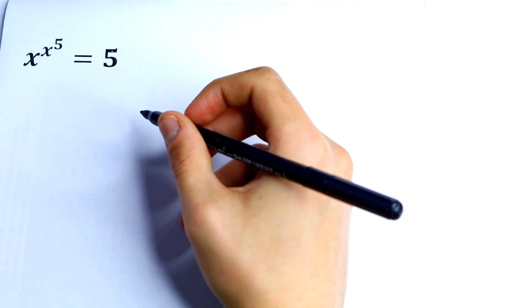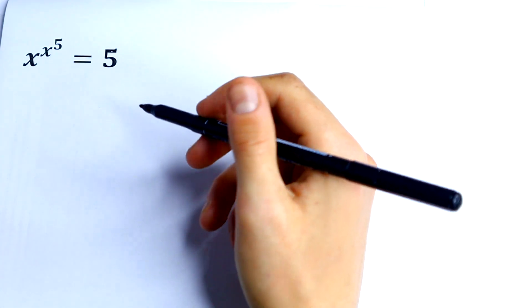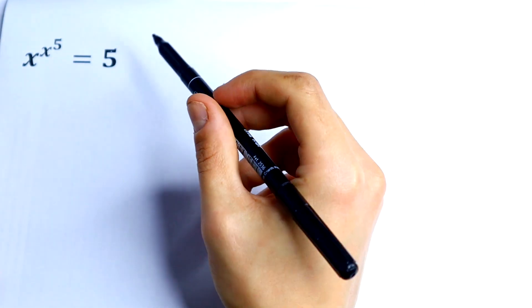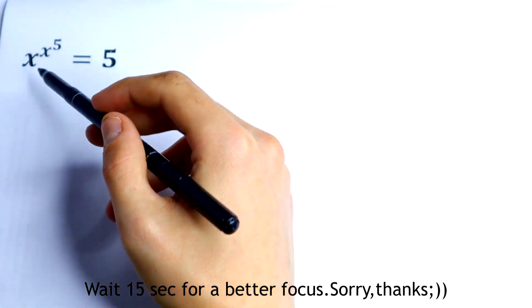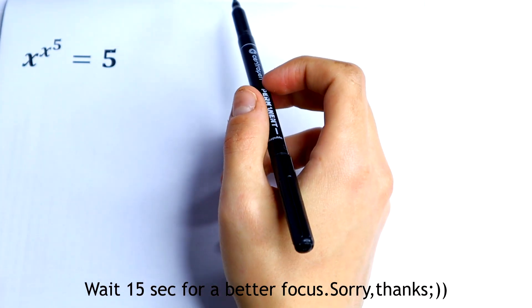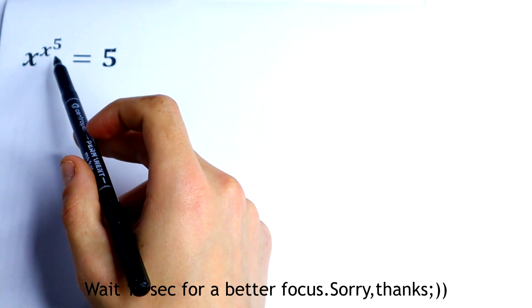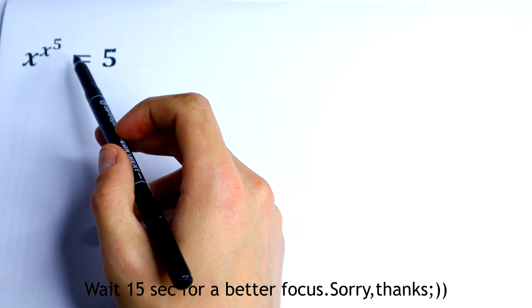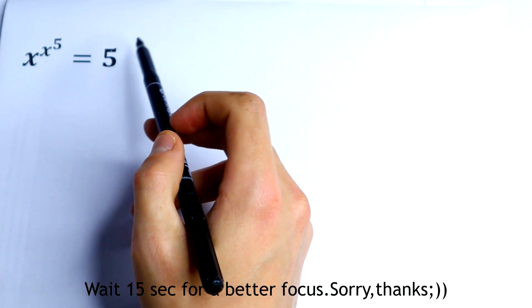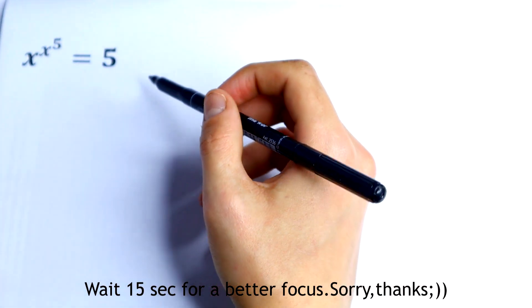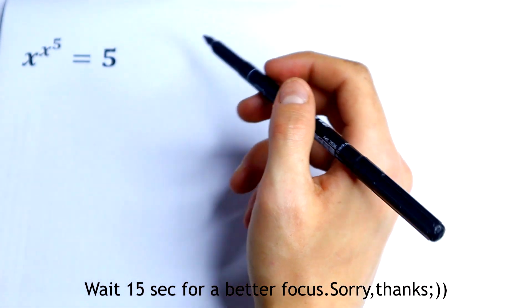Hello everyone and welcome to MathMood. Here we have an interesting equation: x to the power x to the 5th power equal to 5. How can we solve it?